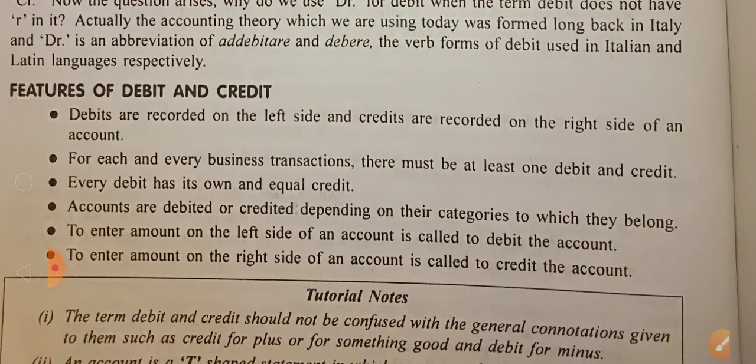Accounts are debited or credited depending upon their categories. Categories depend on the personal, real, and nominal particular transaction — receiver, giver, commission goes out. To enter the amount on the left side of an account is called debit, and to enter on the right side is credit.